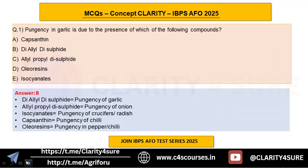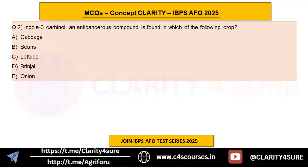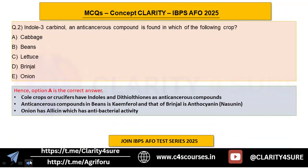Question number two: indole-3-carbinol, an anticancerous compound, is found in which of the following crops? Options are cabbage, beans, lettuce, brinjal, and onion. The correct answer is option A, cabbage. Cold crops or crucifers have indoles and diethylthioethers as anticancerous compounds.